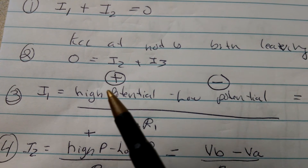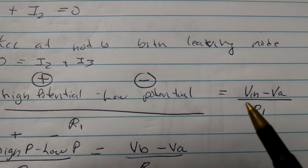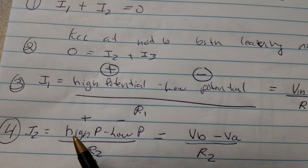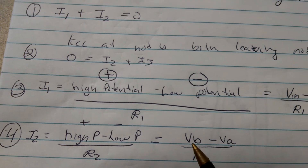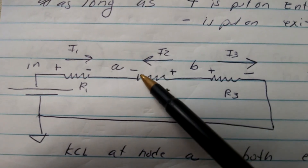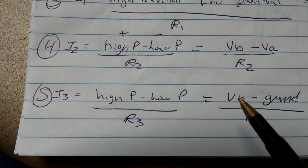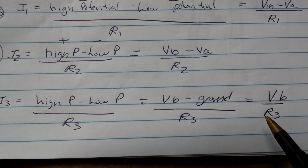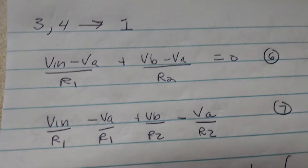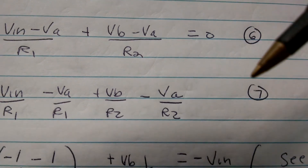Now, how do we calculate I1? I1 is the high potential node minus the low potential node divided by R1 — plus, minus. In this case it's VN minus VA divided by R1, as you would expect. I2 is the high potential node minus the low potential node divided by R2 — in this case VB minus VA, because the positive sign is there at VB and the negative sign is there. I3 is high potential minus low potential: VB minus ground divided by R3, which is VB divided by R3. You can put equations three and four into one and solve.